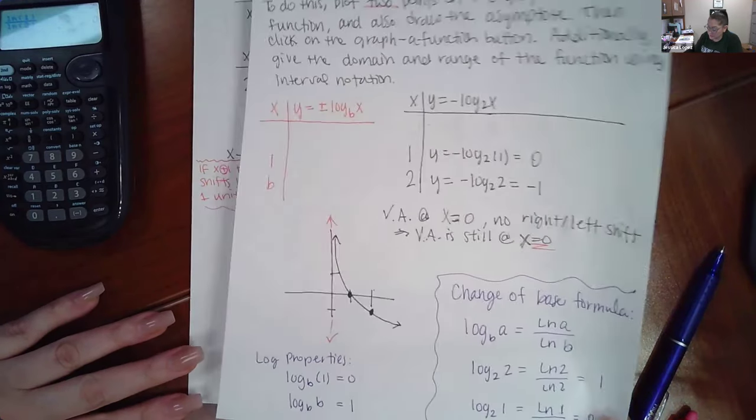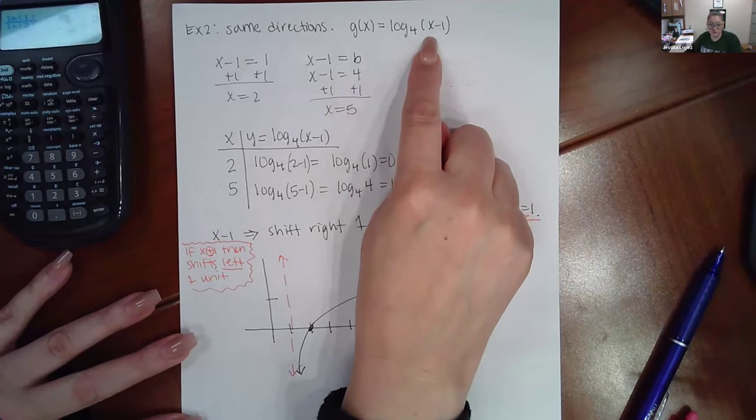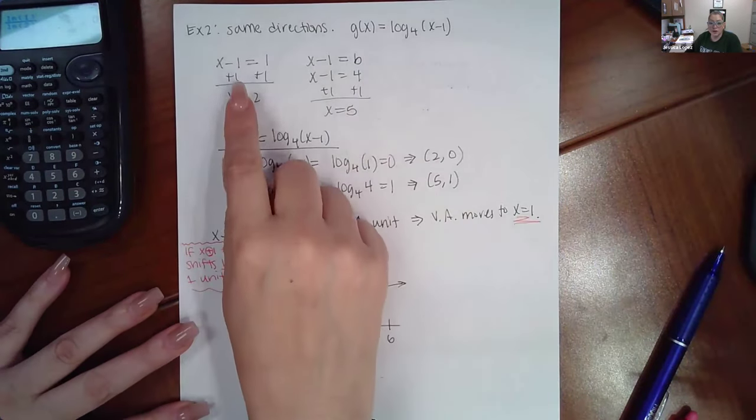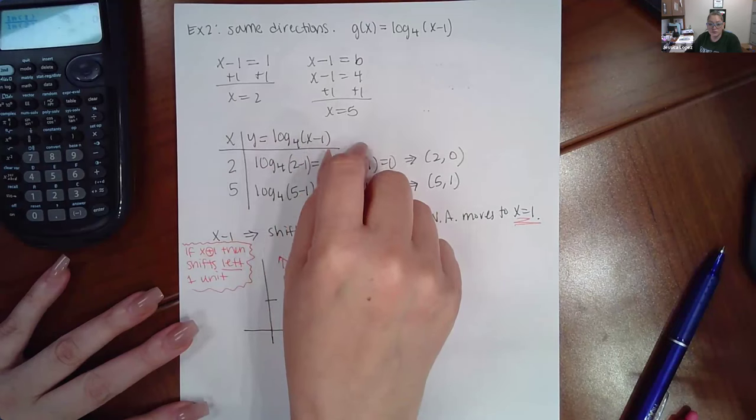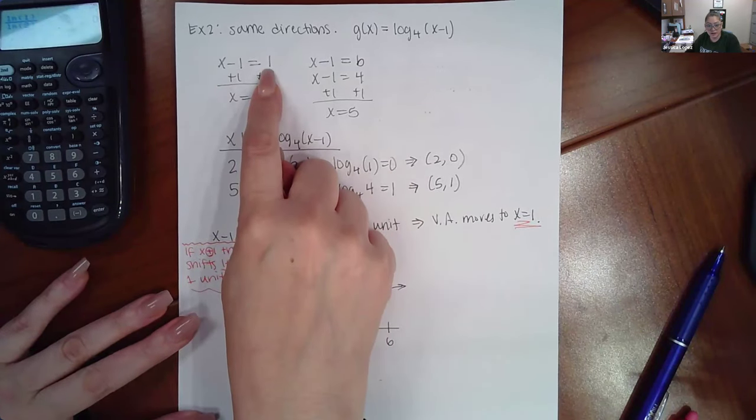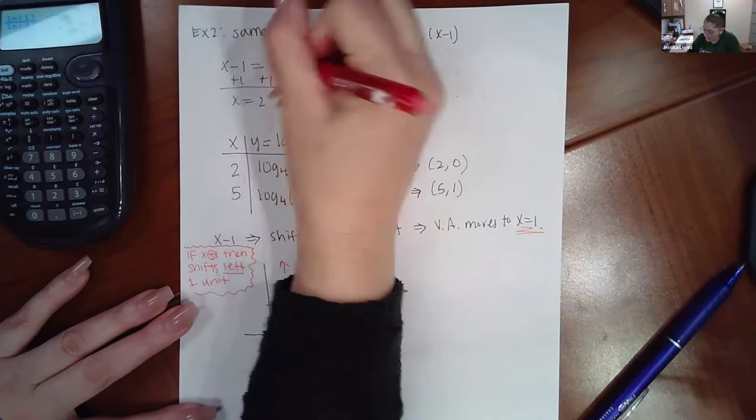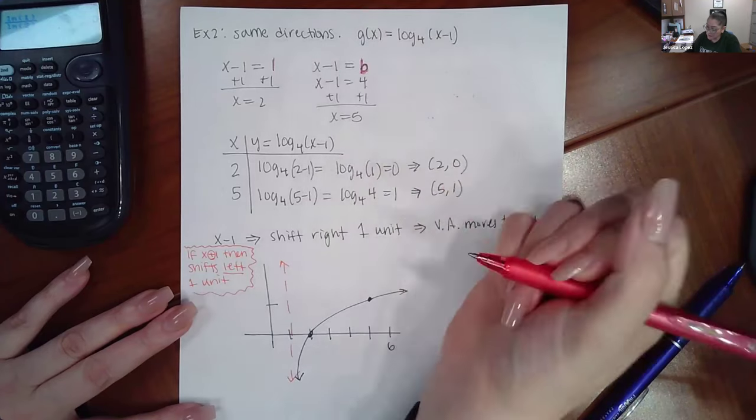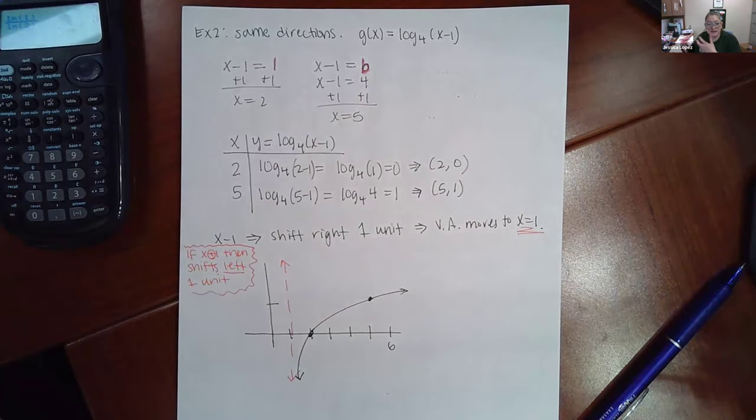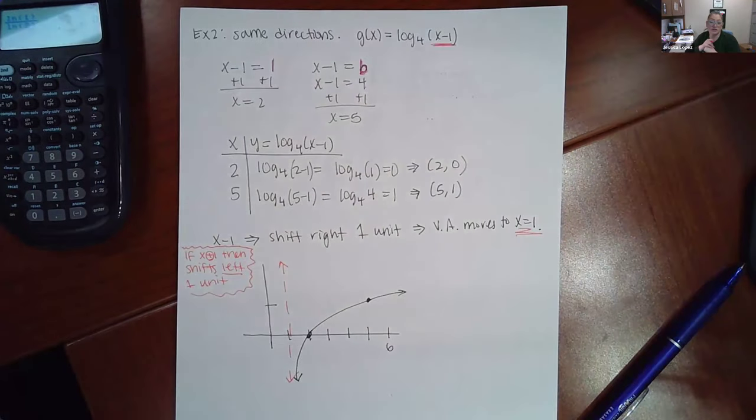But that's just not the case for this particular problem. So here's another example. And this one does have a shift. So in order for me to figure out those numbers, the first one was supposed to be at the x value one, and the second point was supposed to be at the x value of the base.